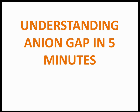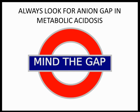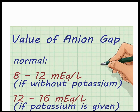In today's lecture we'll see what is anion gap in five minutes. Whenever you have a patient with high anion gap with metabolic acidosis, look at the anion gap — always mind the gap. The normal values of anion gap are 8 to 12 without potassium, and 12 to 16 milliequivalents per liter when potassium is included in the calculation.